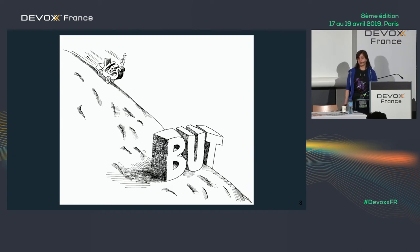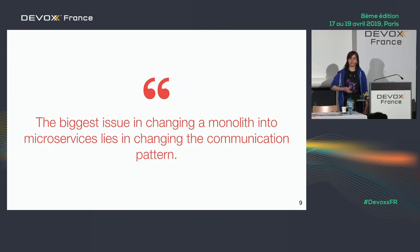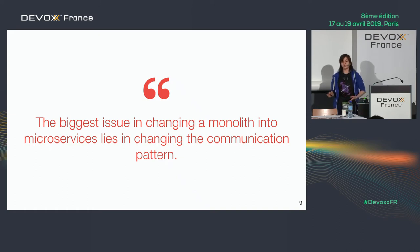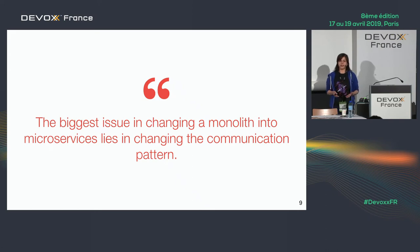But we cannot talk only about pros — there is always one 'but.' The biggest issue in changing a monolith into microservices lies in changing the communication. Communication is a big problem. In a monolith, you trigger services in your own codebase on the same server. When you switch to microservices, you don't control it anymore — you use another service running on another machine, maybe in another cluster, and you need to use the network, which is not reliable by default. You have a lot of delays and increased latency.